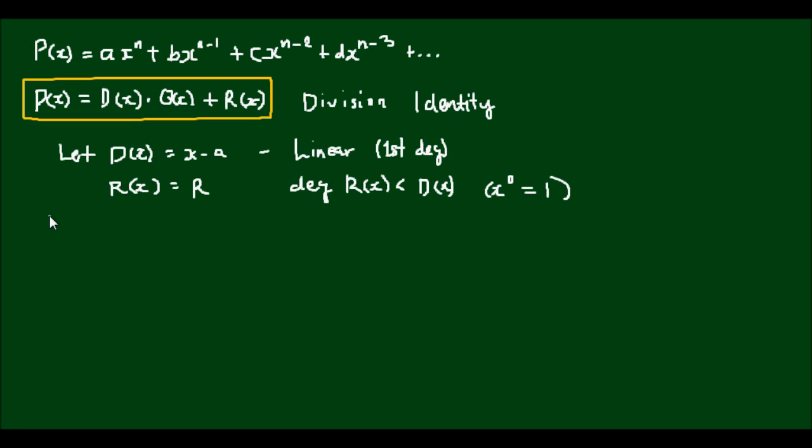So that means p, written in this form, is x minus a multiplied by q plus the constant r. And conversely, I can write this equation as the remainder, if it's unknown, is equal to the polynomial p of x minus x minus a times q of x.